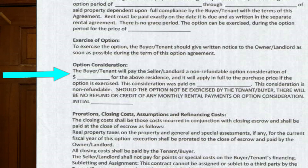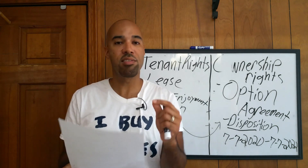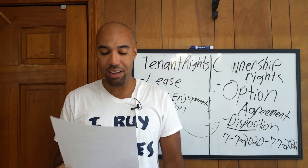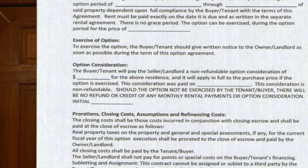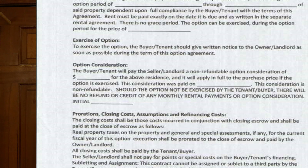The buyer/tenant will pay the seller/landlord a non-refundable option consideration — we don't say 'option deposit' because deposit might be misconstrued as something that can be returned. I like to get $5,000, $3,000 — whatever you can get — for the above residence, and it will be applied in full to the purchase price if the option is exercised. 'If' is the biggest word in the dictionary. This consideration is non-refundable. I want my buyer to initial here confirming they understand it's non-refundable and will not be returned if they don't buy the house.